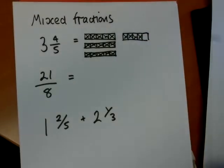We're going to look at mixed fractions. I'm going to show you how we can write 3 and 4 fifths as an improper fraction. So I'm going to work out how many fifths altogether 3 and 4 fifths is.